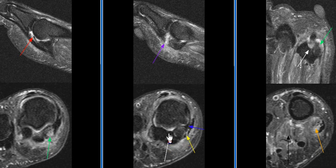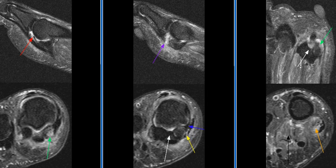The intersesamoidal ligament and the metatarsal phalangeal ligament are intact. There is strain of the lateral head and the medial head of the flexor hallucis brevis muscle.